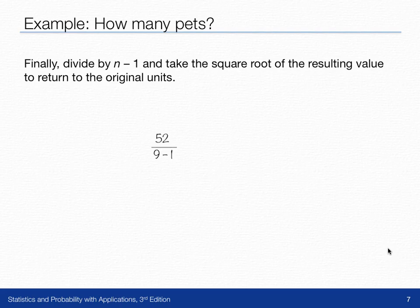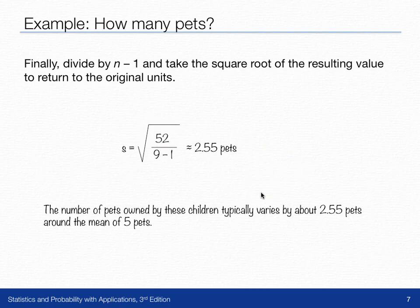We'll take the square root of that resulting value to return to the original units. Because that 52 is a squared value, we want to return to the original value of pets.